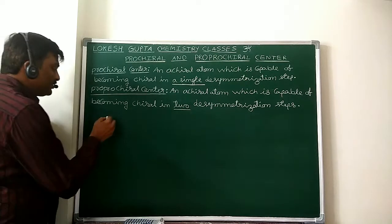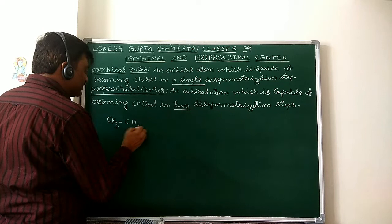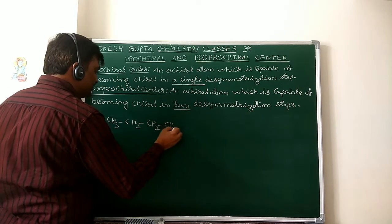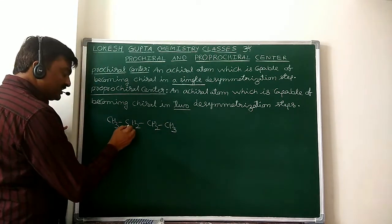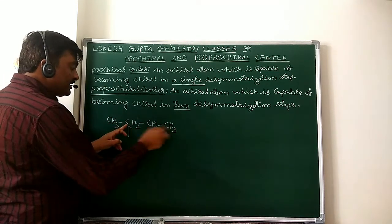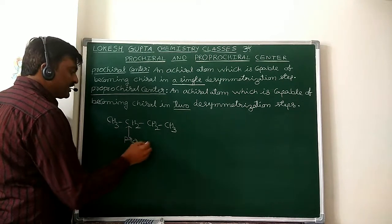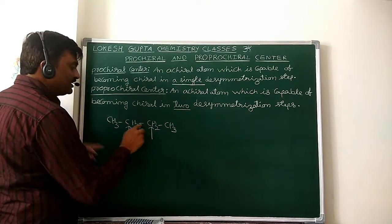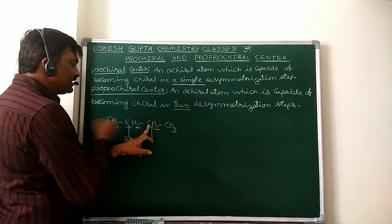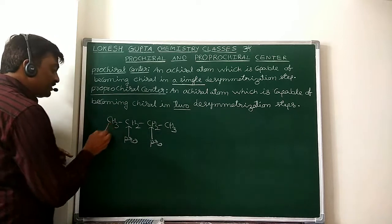For example, take normal butane: CH3-CH2-CH2-CH3. This central carbon is attached to Methyl, Ethyl, and two Hydrogens — so it is Pro Chiral. This other central carbon is also attached to Methyl, Ethyl, and two Hydrogens — so it is also Pro Chiral.